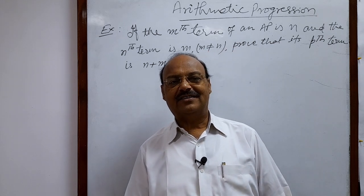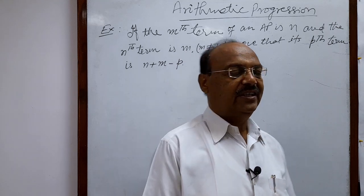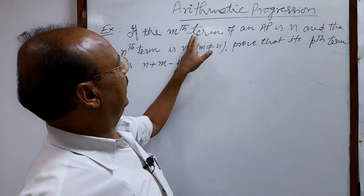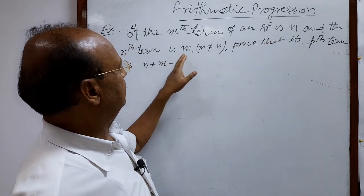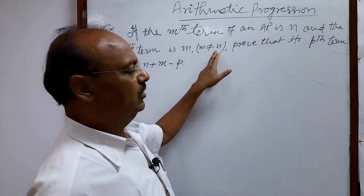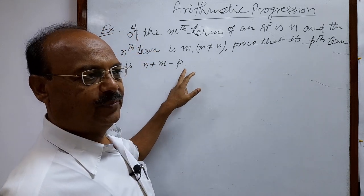Welcome students, let us see a very interesting and important question from the topic arithmetic progression. Here the question is: if the mth term of an AP is n and the nth term is m, where m is not equal to n, prove that its pth term is n plus m minus p.